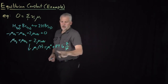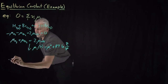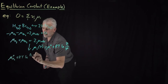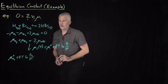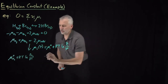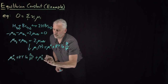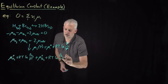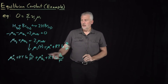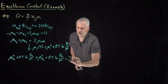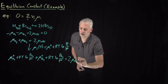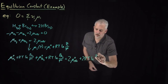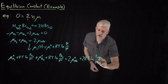Substituting that expression in, the chemical potential of H₂ is μ° plus RT·ln(P_H₂/P°). Adding that to the chemical potential of Br₂, which is μ°(Br₂) plus RT·ln(P_Br₂/P°). And on the right-hand side of the equation, I've got twice the standard chemical potential for HBr and twice RT·ln(P_HBr/P°).